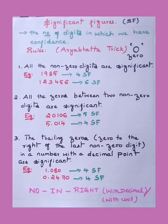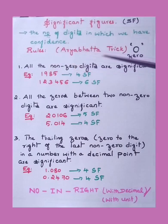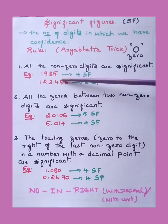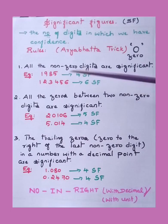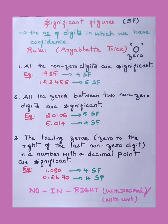I will explain the concepts in English with some explanation in Kannada in between. First rule: all non-zero digits are significant. For example, the number 1985 — in it, 1, 9, 8, 5 — there is no zero here. All are non-zero digits, so all non-zero digits are significant. We write 1985 with full confidence. How many significant figures are here? One, two, three, four — there are four significant figures. For the next digit with six non-zero figures, there are six significant figures because there is no zero.